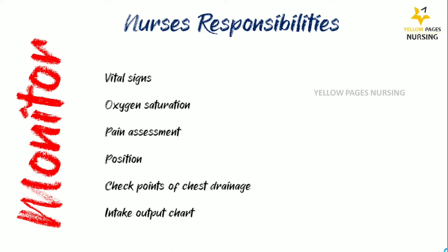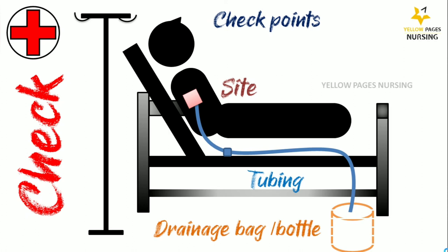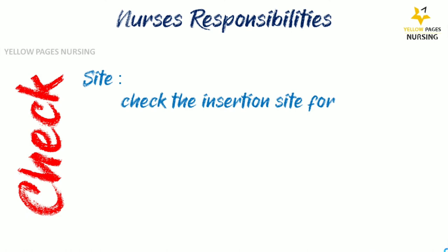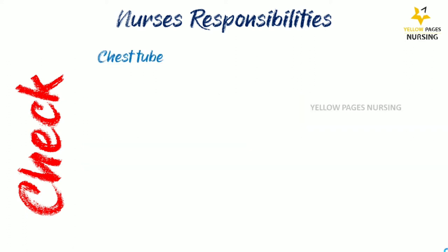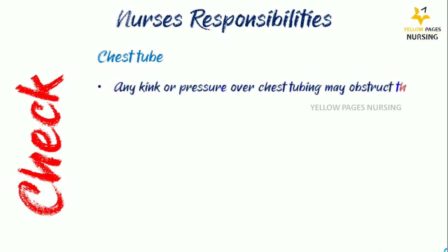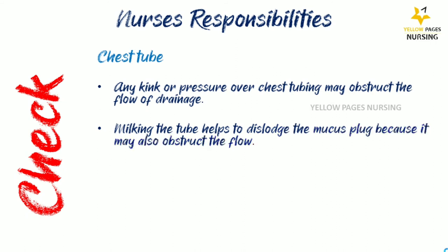Checkpoints of an ICD include the site, tubing, and drainage bag or bottle. Regarding the site: check the insertion site for oozing, discharge, or surgical emphysema. Regarding the chest tube: check for any kink or pressure over the tubing which may obstruct drainage, ensure the patient is not lying over the tubing, and milk the tube to dislodge mucus plugs that may obstruct flow.